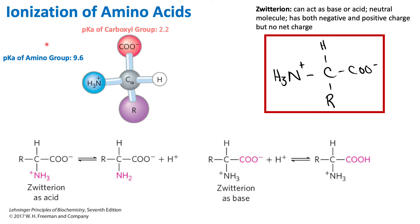When we talk about ionization, it refers to the ability of a molecule or an atom to ionize, or give up and dissociate into its ions. When we talk about amino acids specifically, we are talking about the ability to donate or accept hydrogens. Looking at the general structure of an amino acid, we see the alpha carbon and its four substituents: hydrogen, carboxyl group, amino group, and the R group.